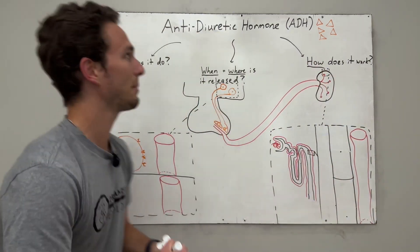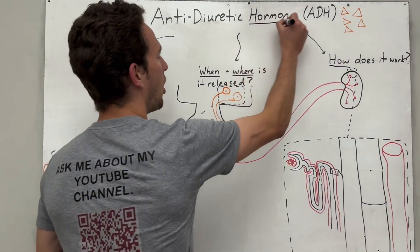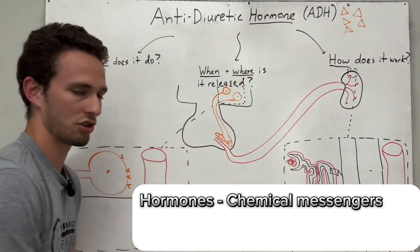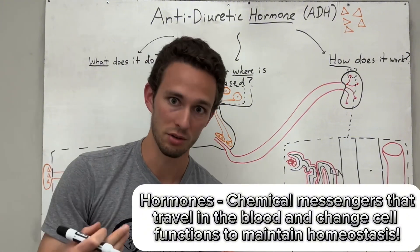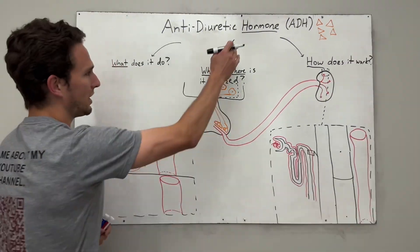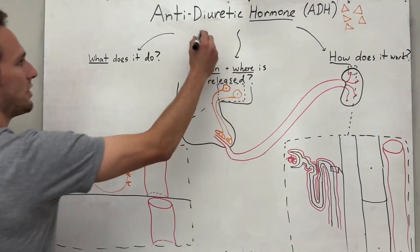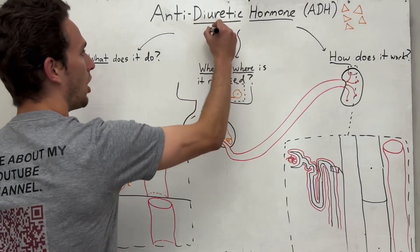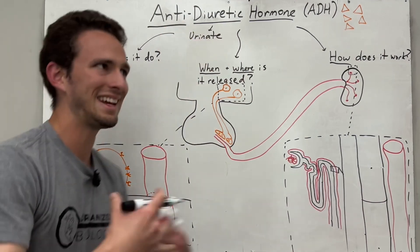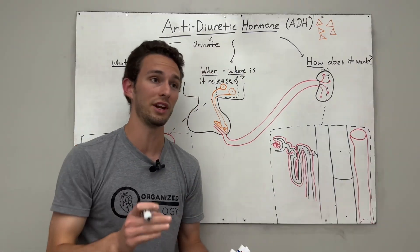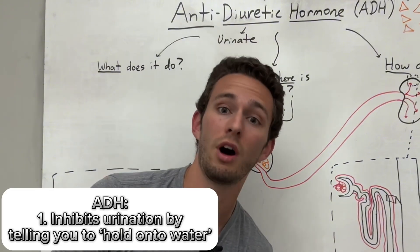So let's begin with the name, as always — antidiuretic hormone. We know that hormones are chemical messengers that travel in the blood and they change cell functions in order to maintain homeostasis. But antidiuretic — what type of change are we going to make on those cells? Well, diuretic means to urinate, but if we're antidiuretic, we're against urination, so this hormone is going to make you not pee, or make you hold onto water.